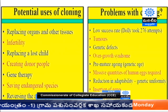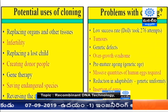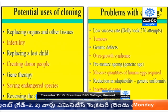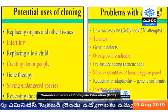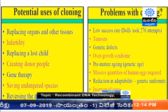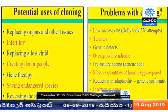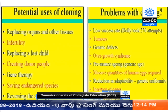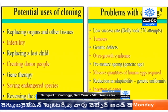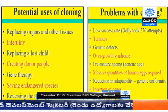Cloning can help us develop new organs or organisms, replace lost cells by producing them in the mother's womb, and gene therapy is one of the best uses of cloning. We can also potentially reverse aging. However, there are problems: overgrowth syndrome, genetic defects, and premature aging. The insertion of genes may or may not be controlled in the cloning process.